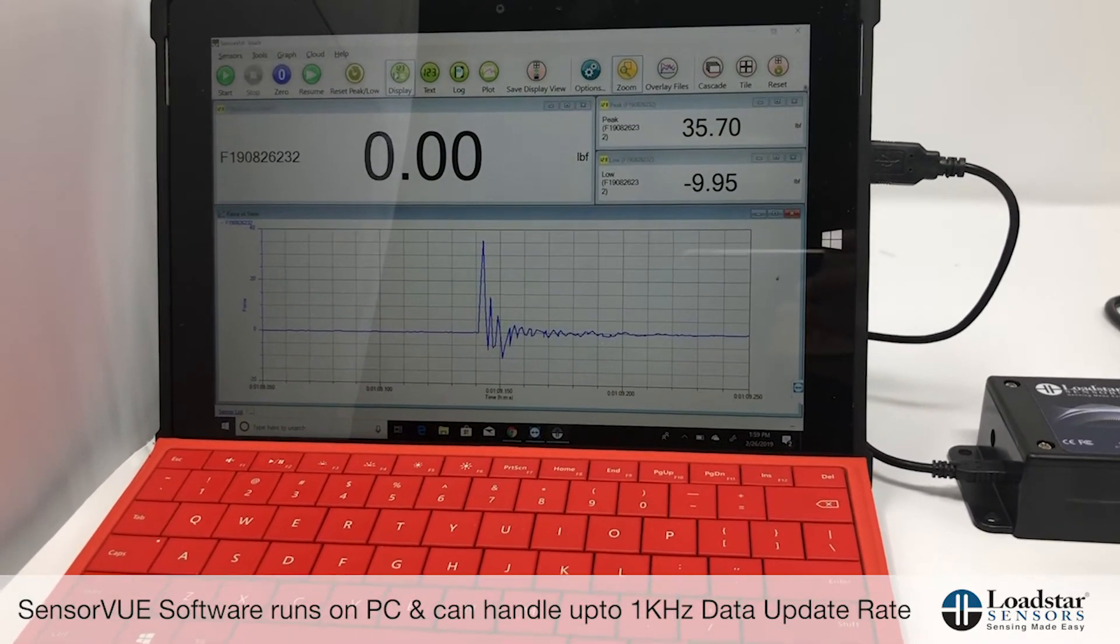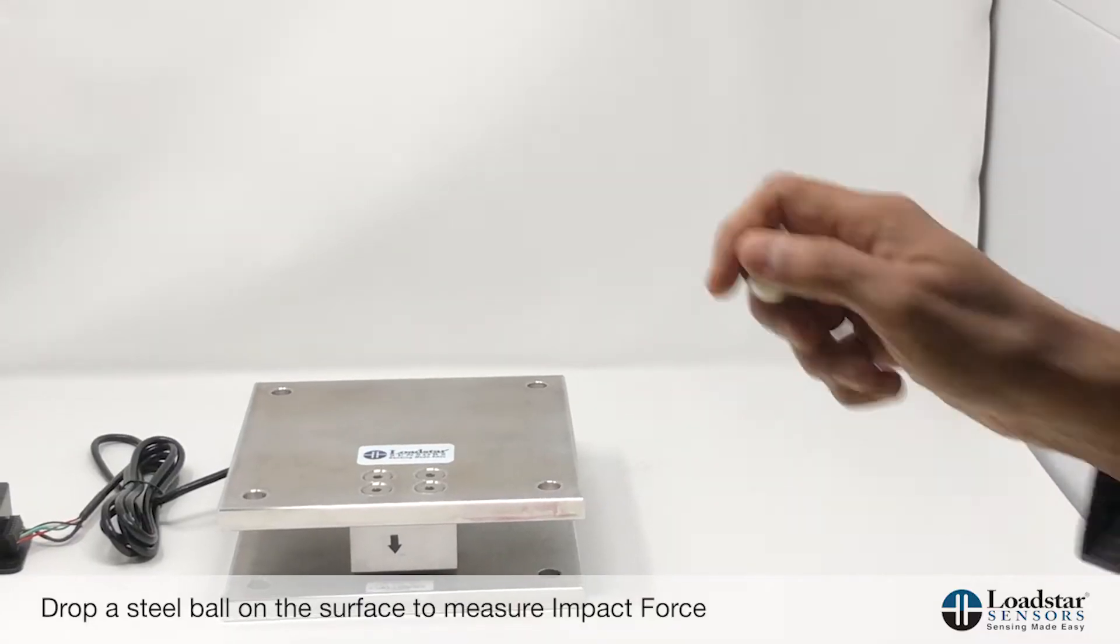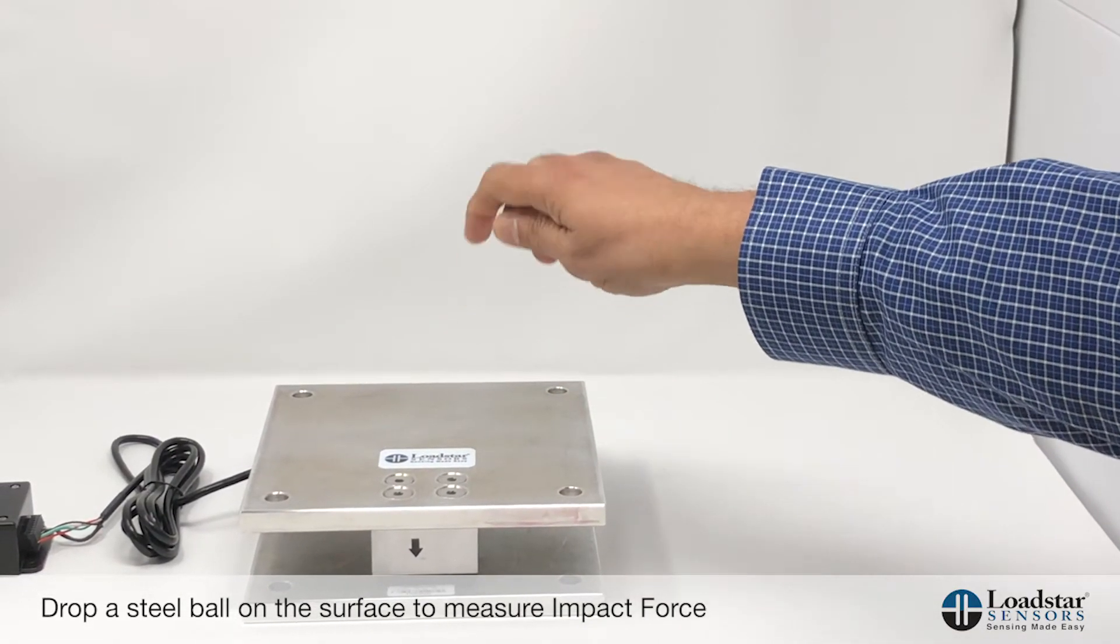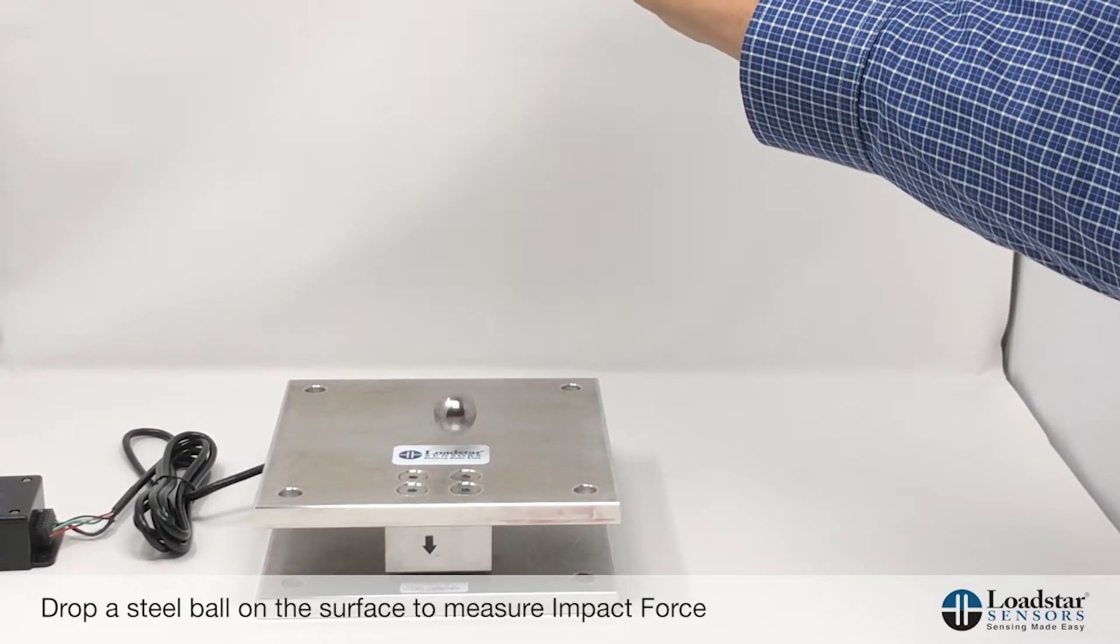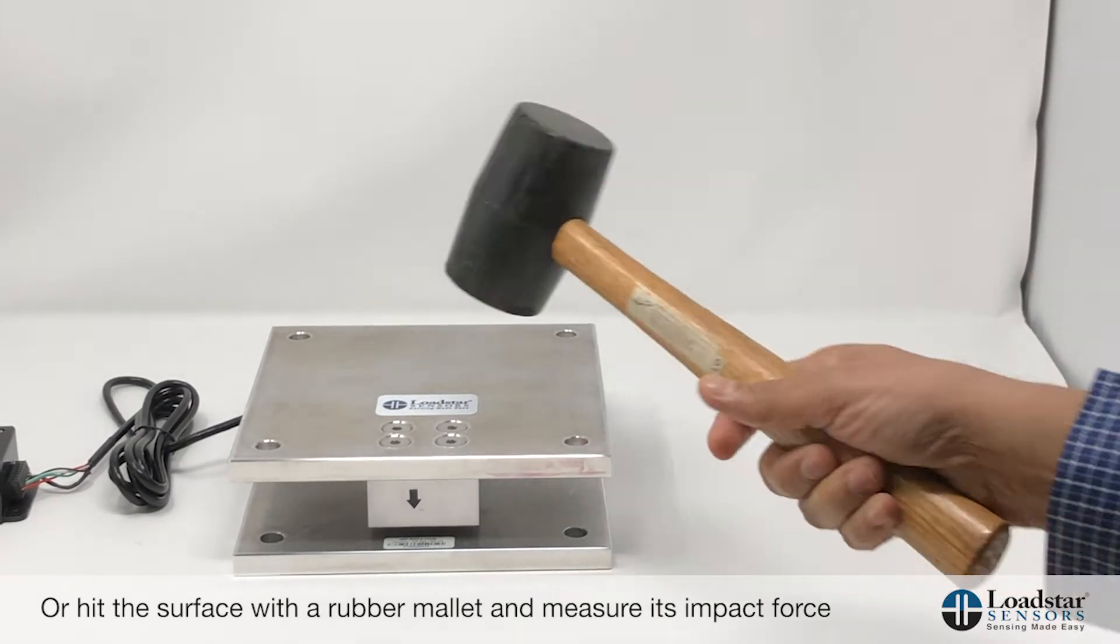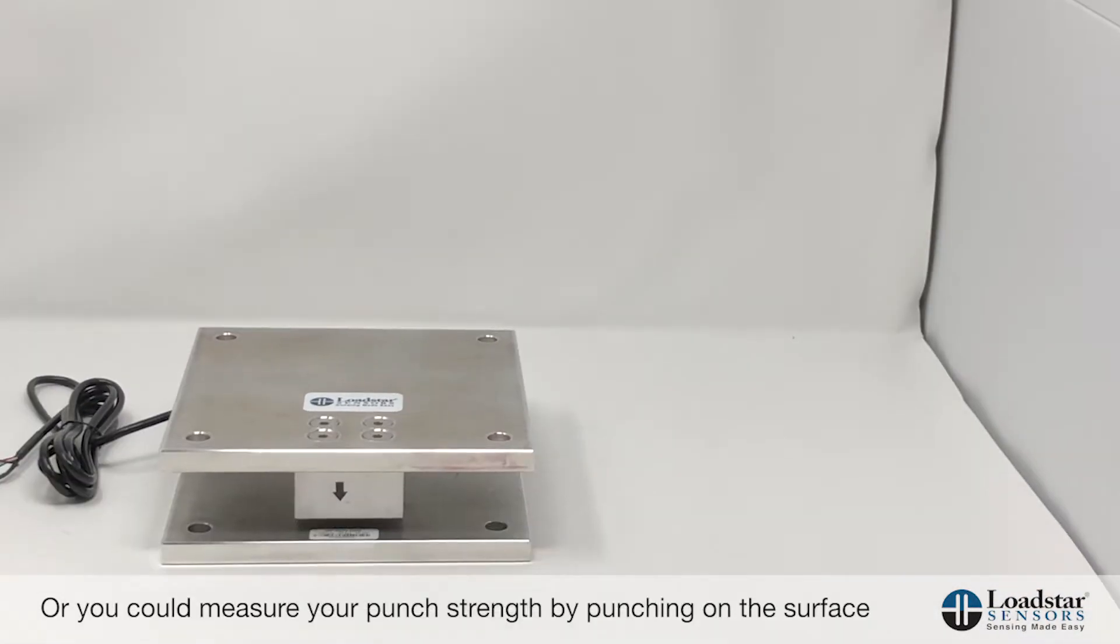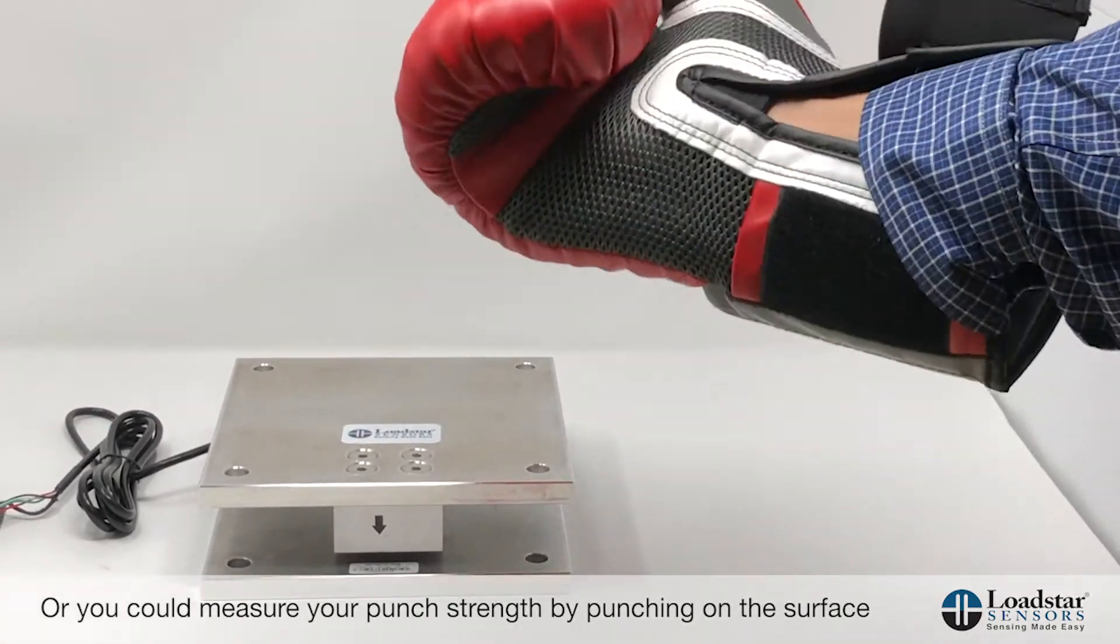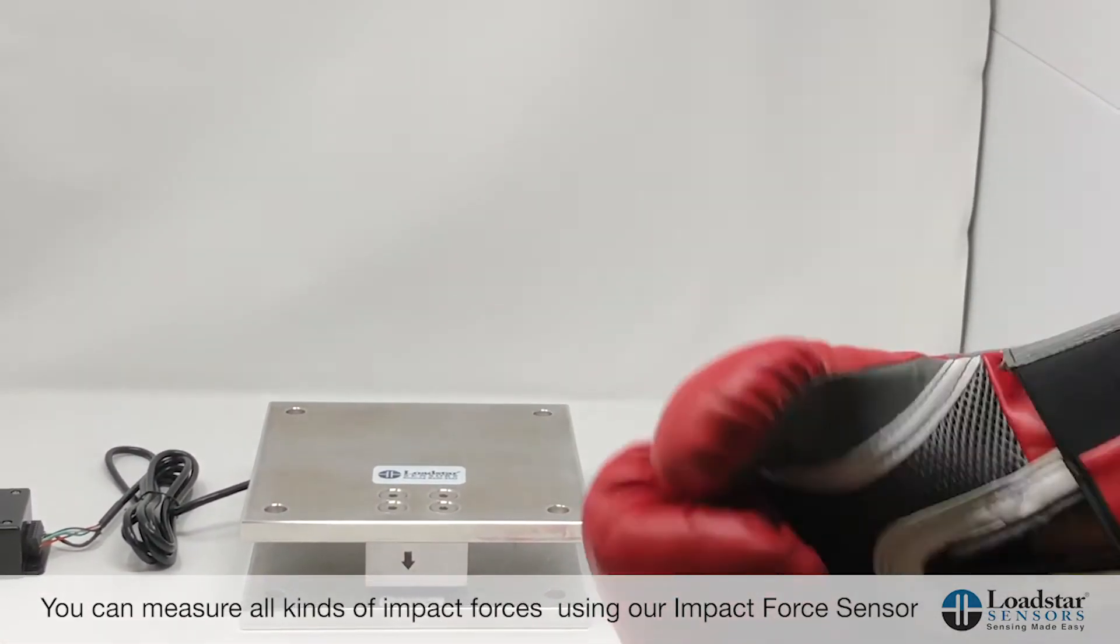This is a surface where you would apply the force. I can take a steel ball and just drop it from here, or you can take a rubber mallet and hit it here like that. This could be a boxing glove punching on it. You can measure all kinds of impact forces using this solution.